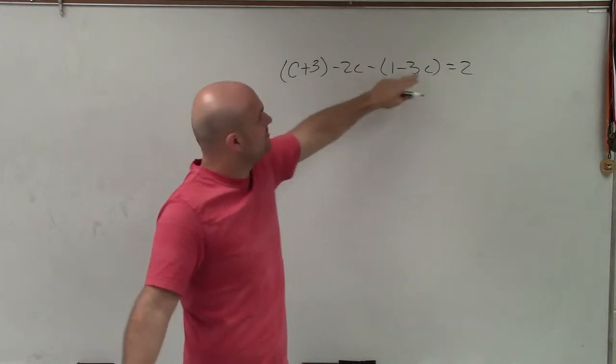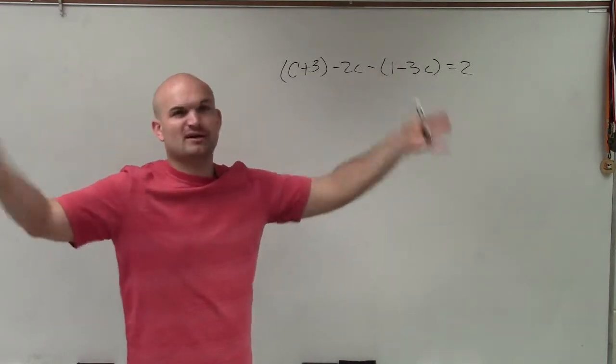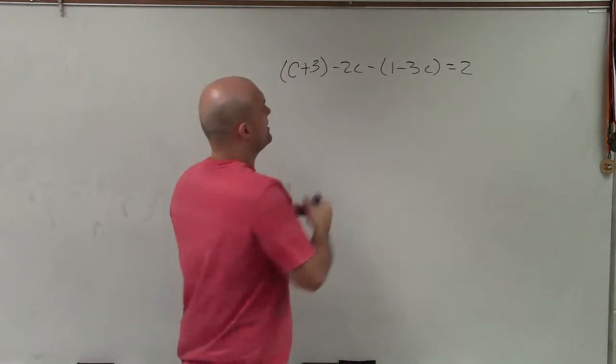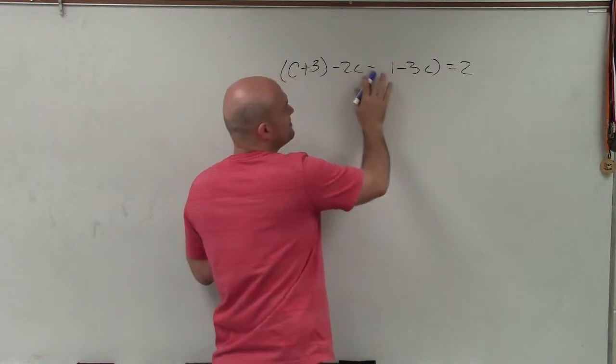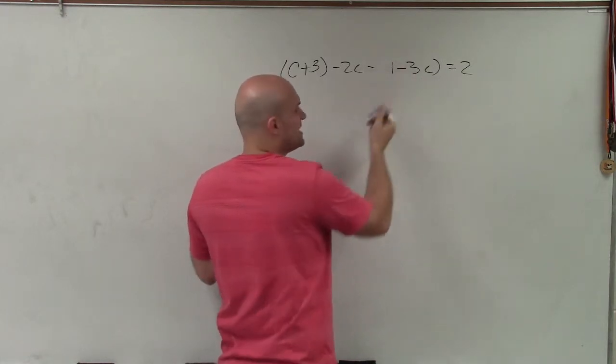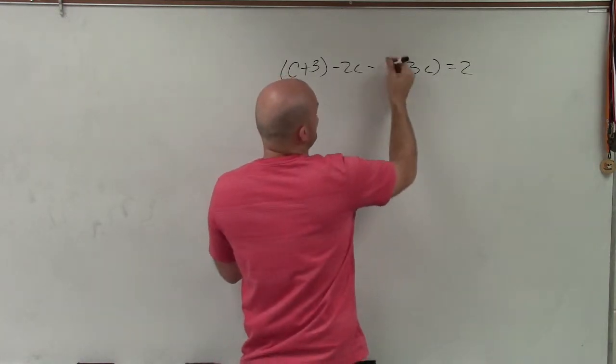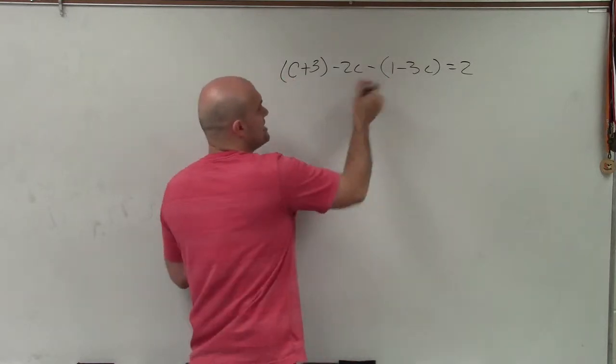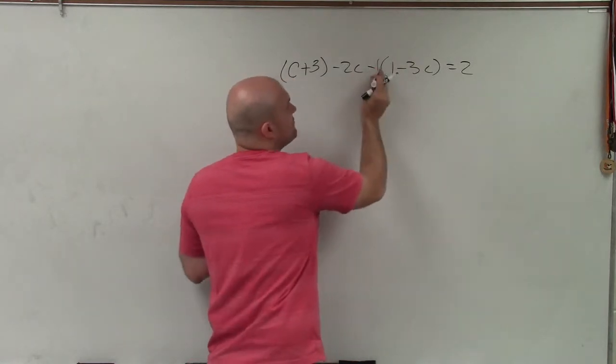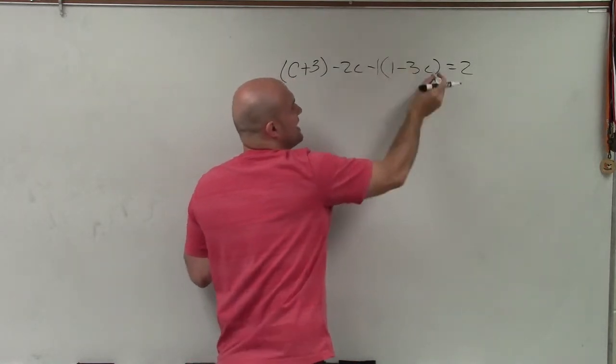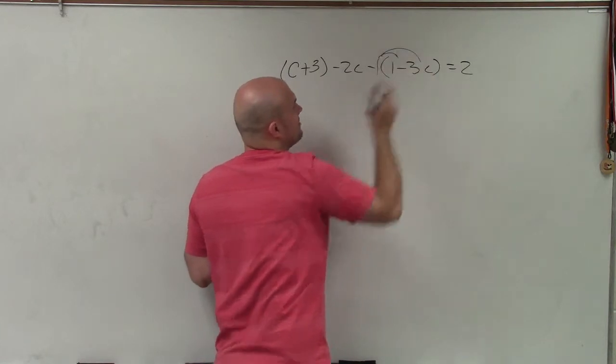Here though we see minus the parentheses and a lot of times students say oh I don't need to worry about parentheses there either, but if I just got rid of the parentheses that would just be minus 1 minus 3c but that's not what that represents. This represents really a negative 1 times 1 times negative 3c so I got to make sure I apply distributive property.